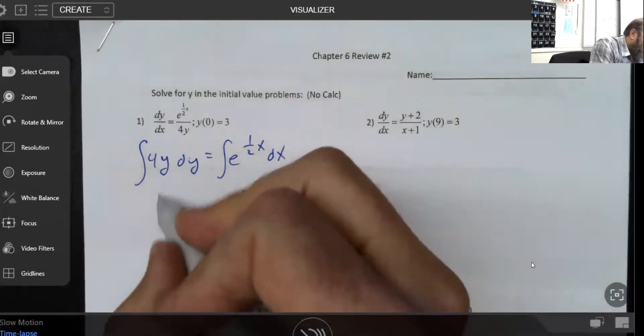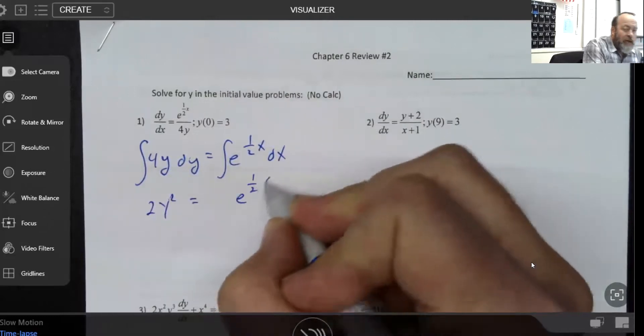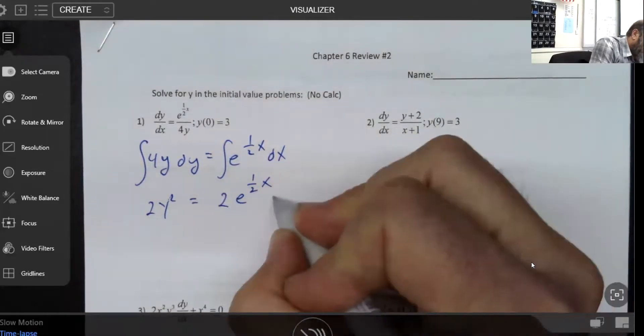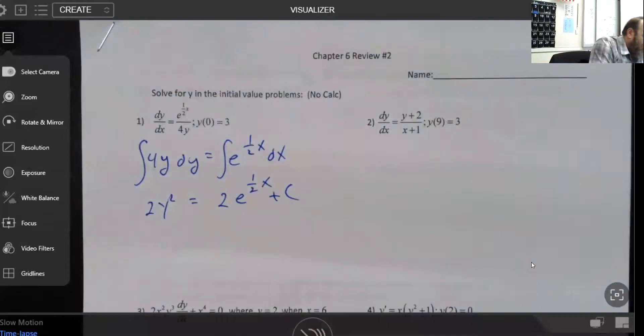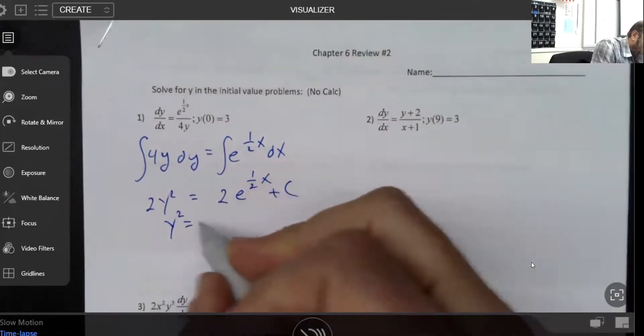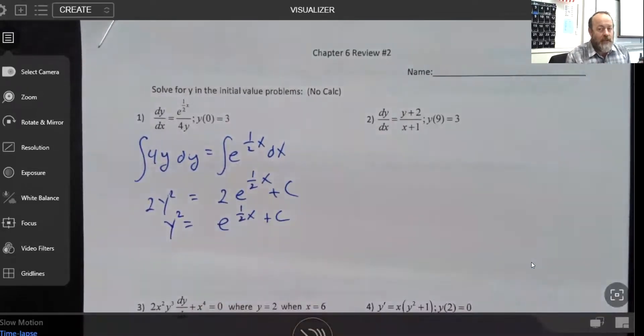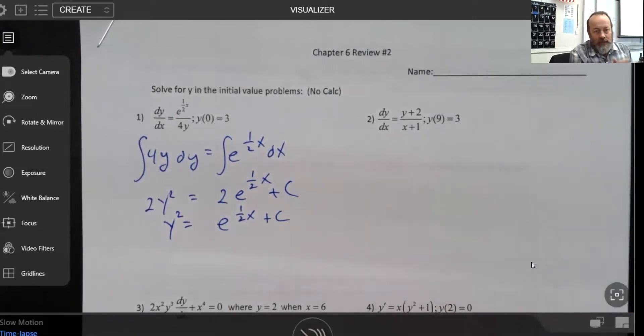So the integral of 4y, of course, is 2y squared. The integral of e to the half x, and I've had a lot of you think it's times a half, but remember, this is an anti-derivative, not a derivative. So the derivative would have that one half in front. So we're going to actually have to double that to make that work. This is one of those places where you have options. I think I would divide both sides by two at this moment to make life a little bit easier, but keep in mind that half of a constant is still a constant. So remember, these c's are not the same c, but they're still just a constant.